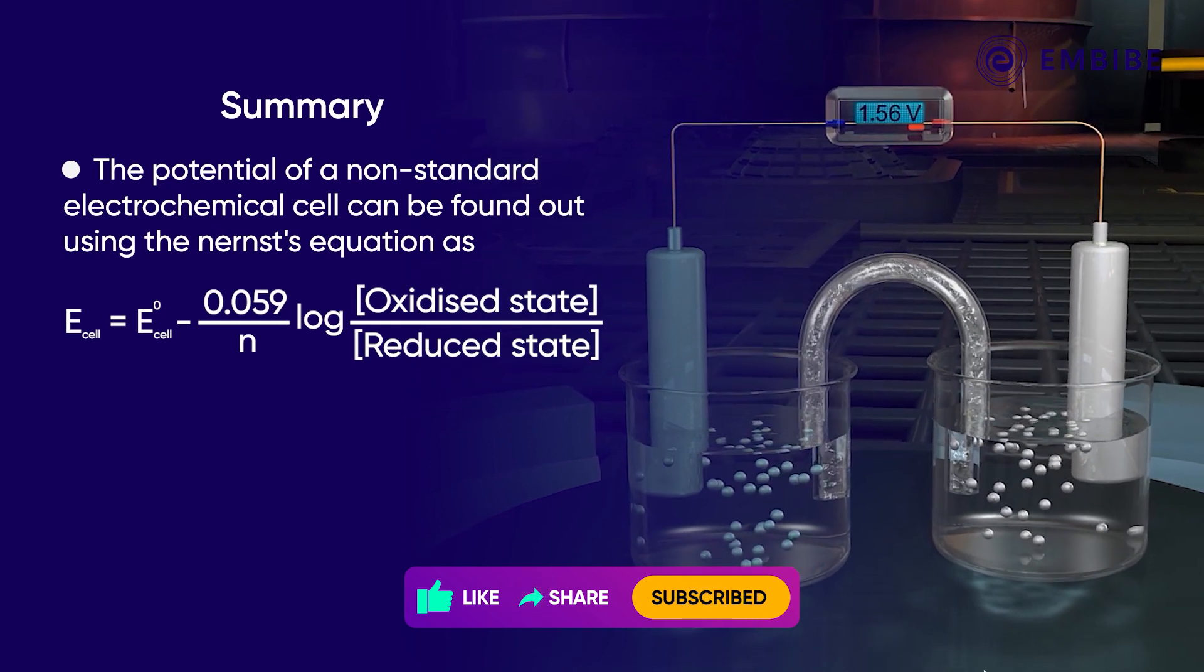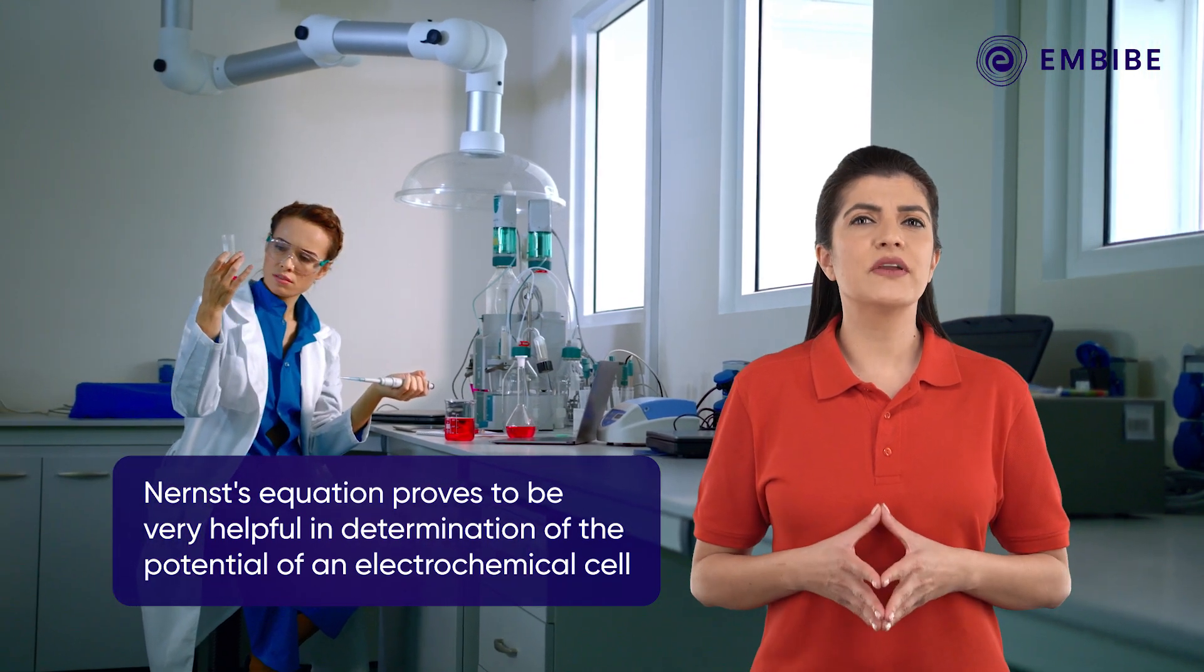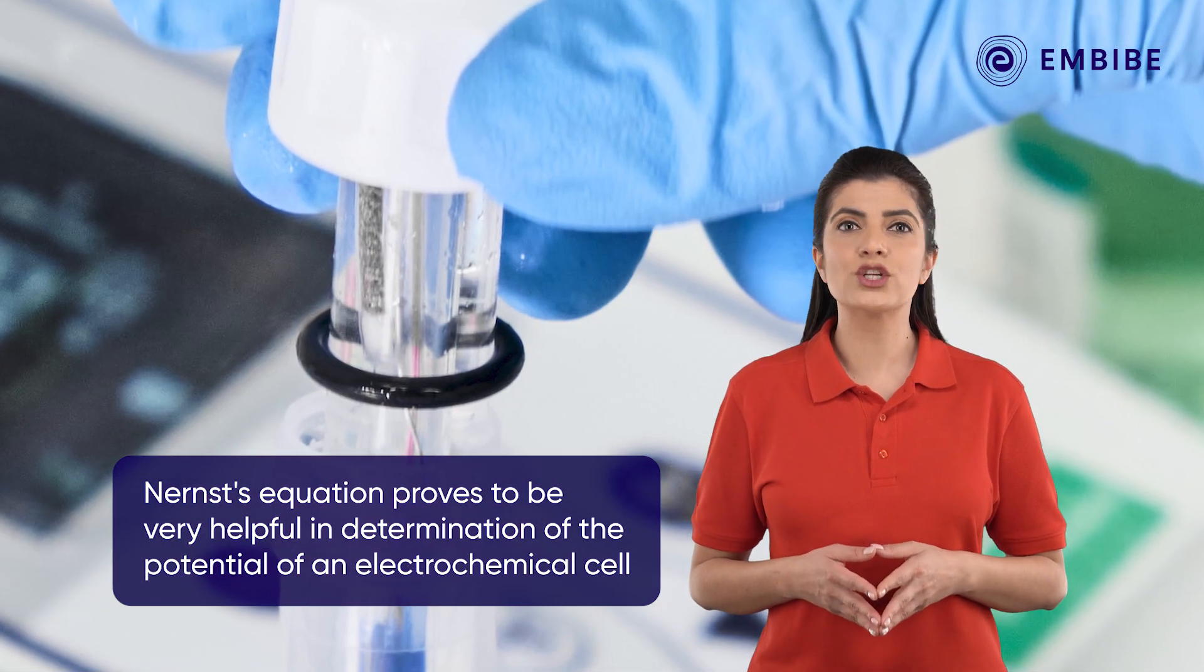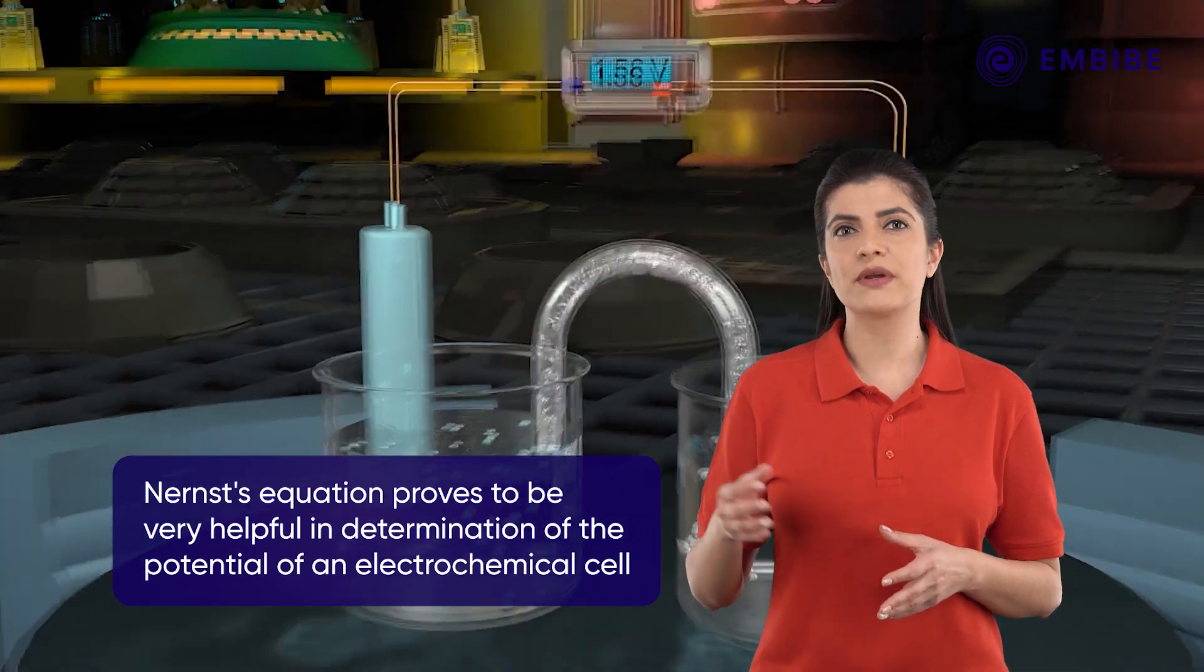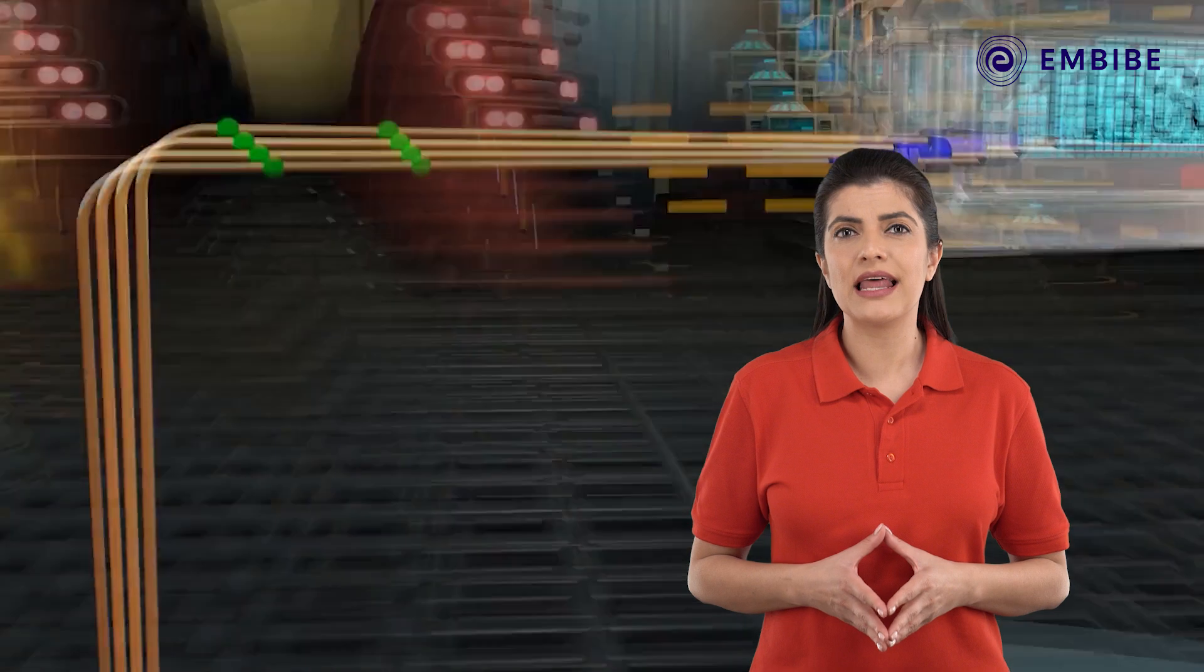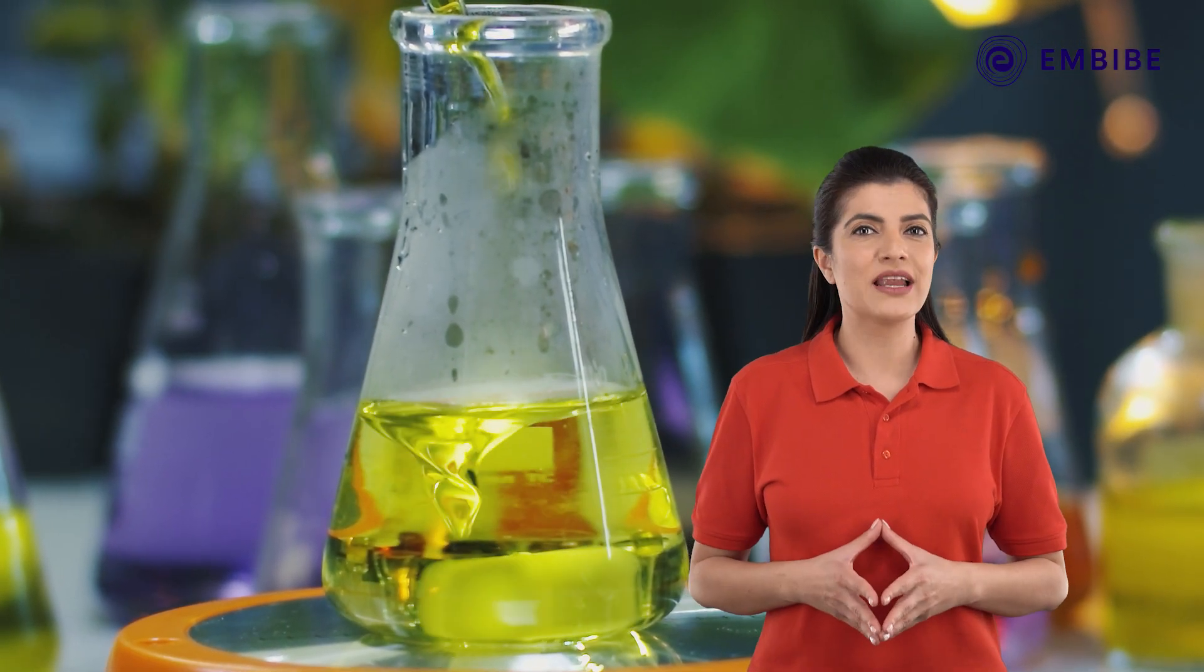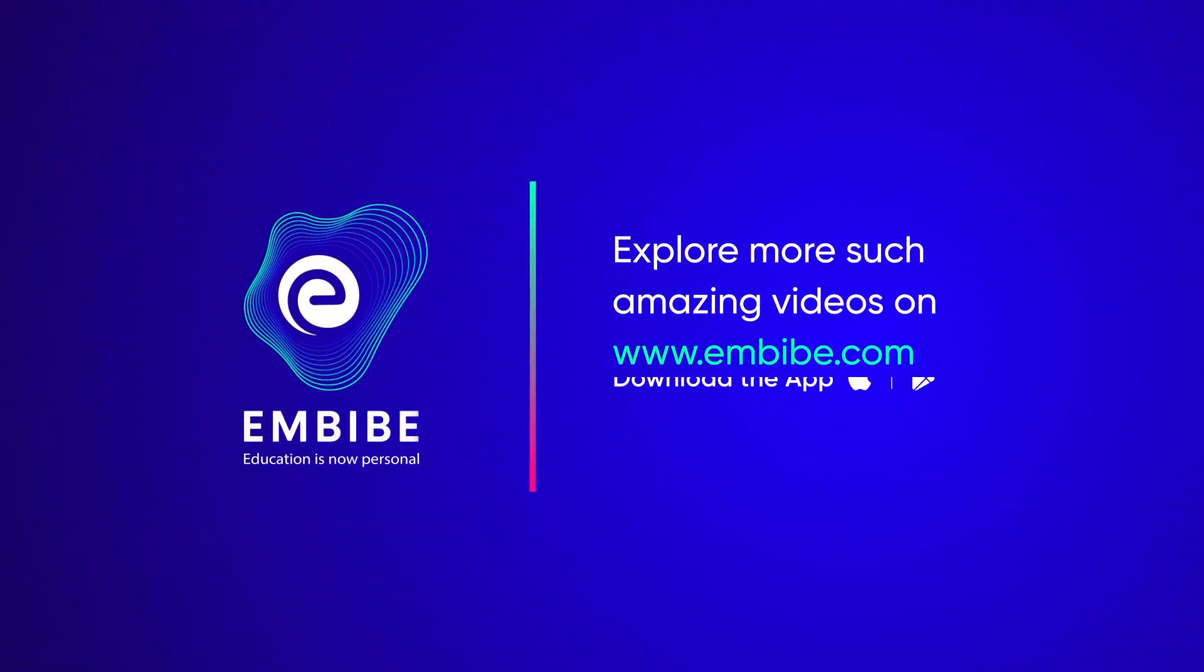To summarize, the potential of a non-standard electrochemical cell can be found out using the Nernst equation. Thus, Nernst equation proves to be very helpful in the determination of the potential of an electrochemical cell. Science becomes easier when it relates with real life situations. We shall be bringing more amazing concepts to you in our upcoming videos. Keep imbibing. We believe in you.